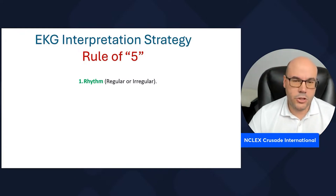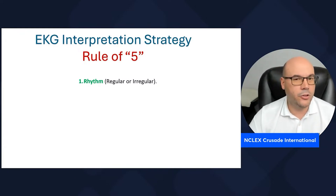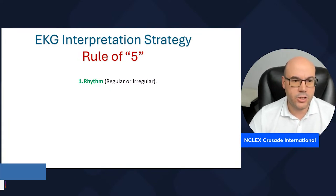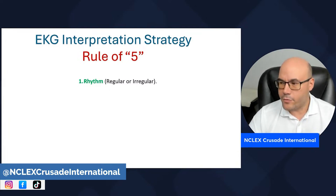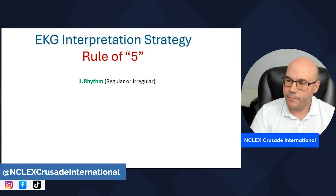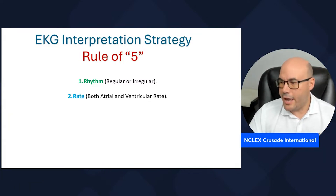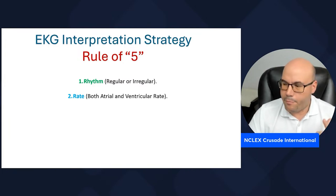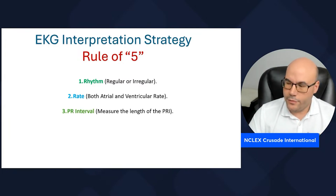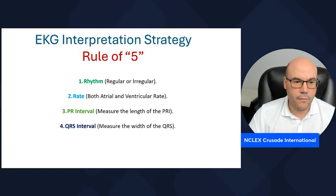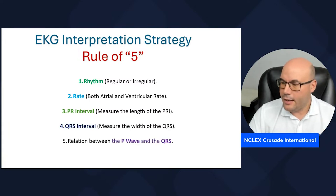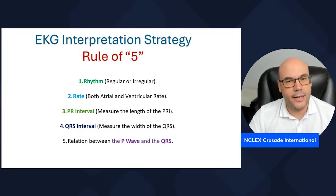The Rule of Five is used to identify and interpret EKG strips. It represents: rhythm, rate — whether atrial or ventricular — the PR interval, the QRS interval, and identifying the relationship between the P wave and the QRS.